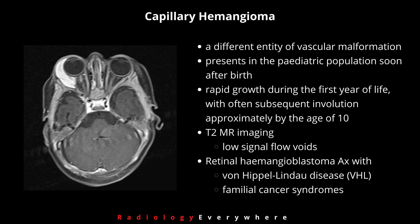Involution typically occurs by approximately age 10. Capillary hemangioma has an association with cutaneous facial malformation and is most commonly found in the extraconal compartment anteriorly, within the superior medial orbital quadrant. The irregularity of the mass with respect to the intraconal compartment can sometimes mimic malignancy.